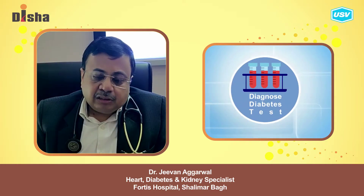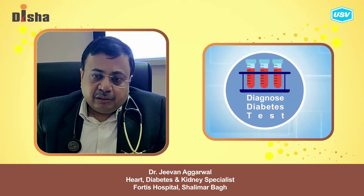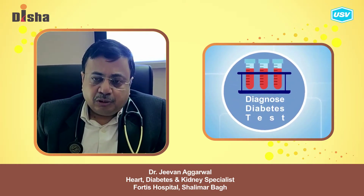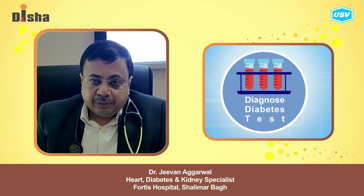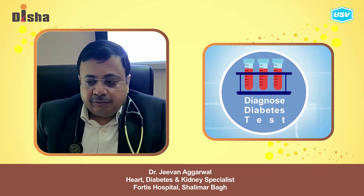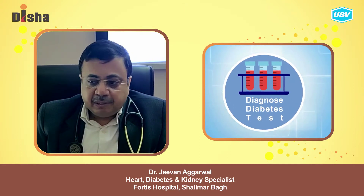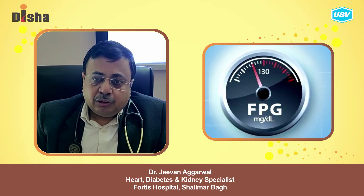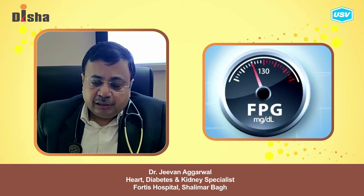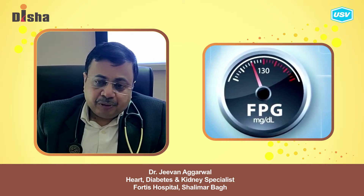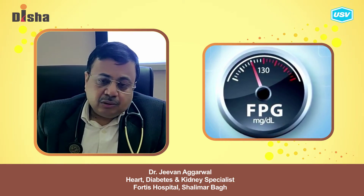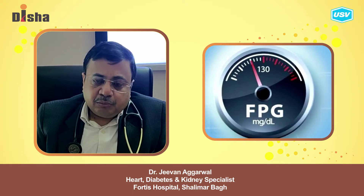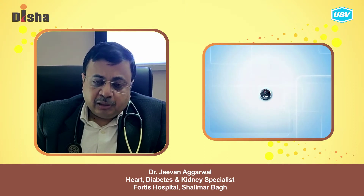ADA has classified 3 to 4 criteria for the diagnosis of diabetes. If a patient has fasting blood sugar more than or equal to 126, or if a random blood sugar is more than 200, then a patient should be considered as having diabetes.